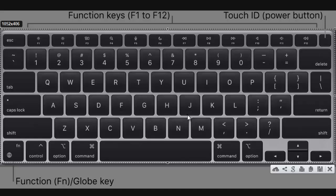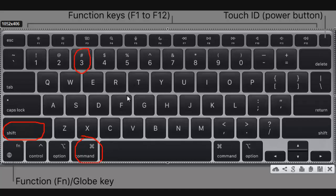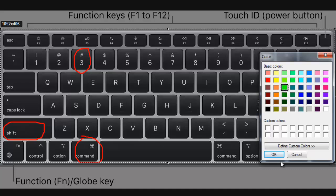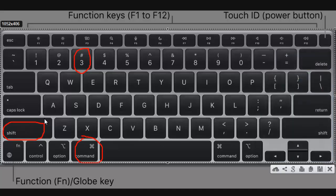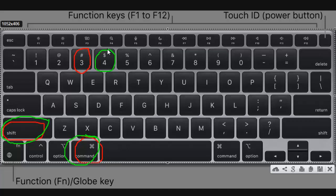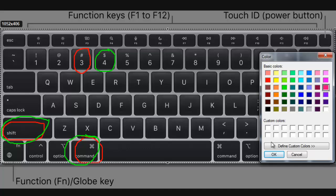If you're a Mac user, to take a screenshot of the full screen press Shift+Command+3 — the screenshot will be saved on your desktop. If you want to take a screenshot of a particular area, press Shift+Command+4. The pointer will become a crosshair — just click and drag to capture the area you want, and it will be saved on your desktop.